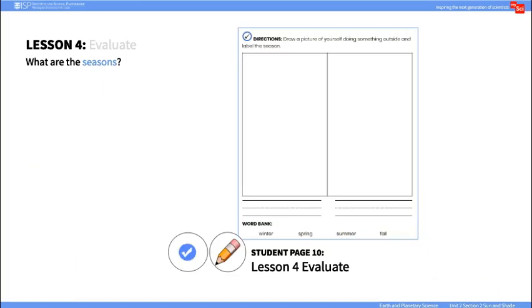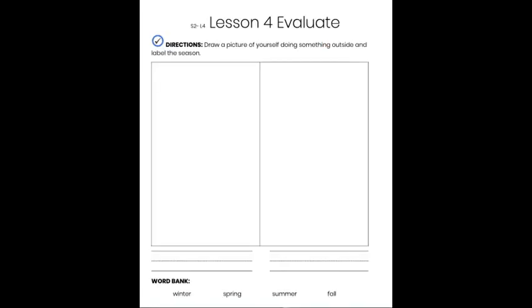In the Evaluate portion of the lesson, ask students to describe activities they like to do in each season. In their Student Journal on this page, they can choose two seasons and draw a picture of themselves doing an activity outside.